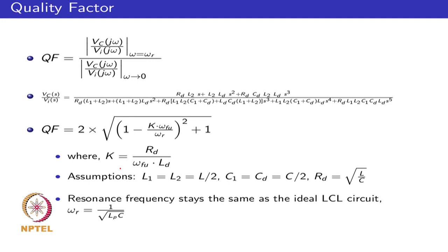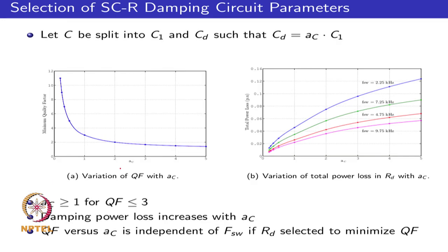The first step was to take an example of a 40 kVA, 250 volt, 3-phase, 4-wire inverter with an LCL filter. As a starting point, we had the grid-side inductor and the inverter-side inductor equal to L/2, which was a good choice for keeping the grid current ripple to a minimum given a constant value of L1 plus L2. The next question was how to split the capacitor between C1 and Cd, where Cd is taken as AC times C1, with C1 plus Cd equal to C — the capacitance selected in the LCL design procedure.